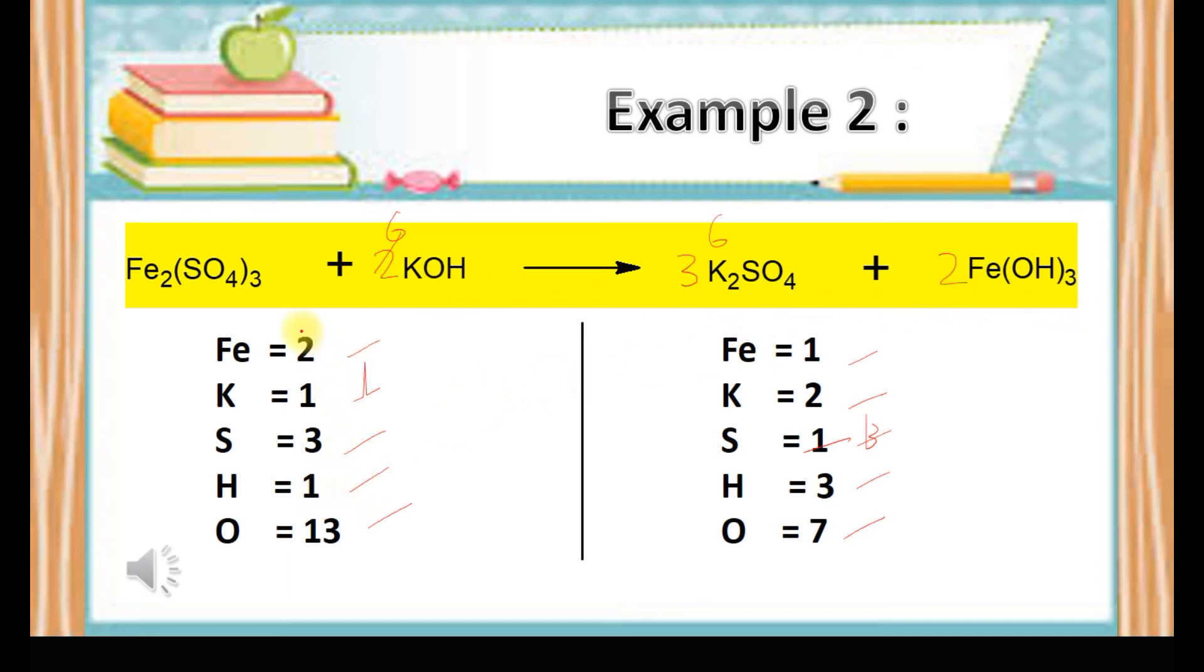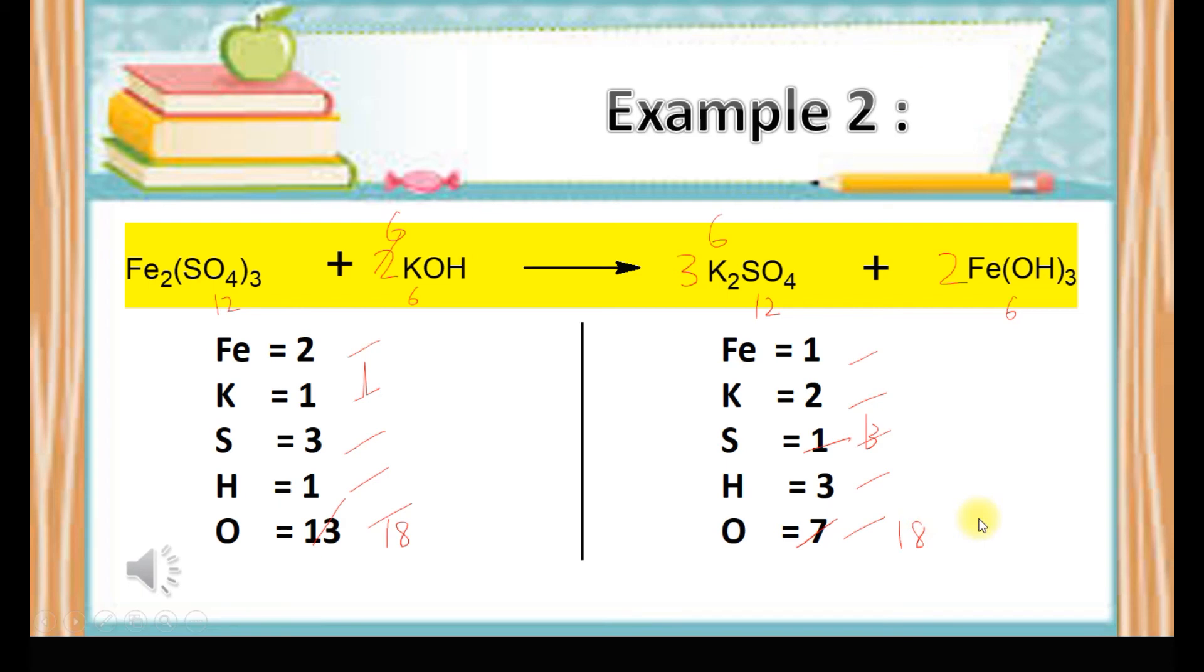Last step: we try to balance the oxygen atom. We can see 3 times 4 oxygen atoms becomes 12, plus 6 oxygen atoms on the left side equals 18. On the right side, 3 times 4 oxygen atoms becomes 12, plus 2 times 3 oxygen atoms becomes 6, so totally is also 18. Now the equation is balanced. Finally, you can check with the answers given here.